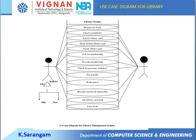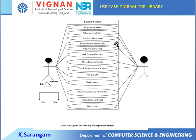This is a use case diagram for a library management system. The actor representation is the user, and the library is also represented. There are two different categories of users: existing students and new students. Staff also interact with the library. Interactions include requesting books and checking availability. These show the interactions between the student and the library.